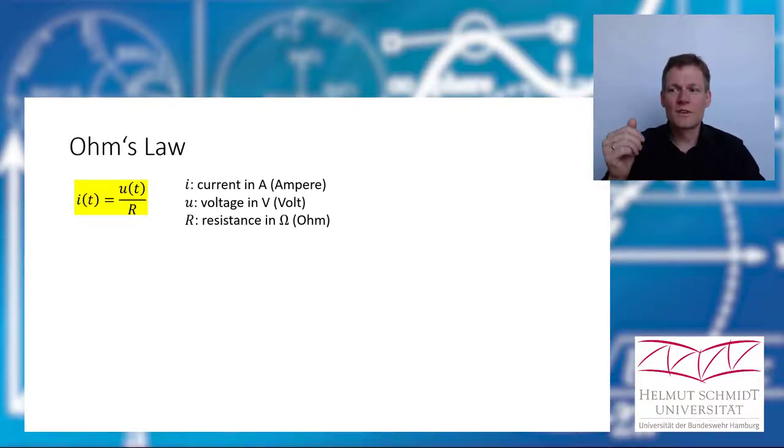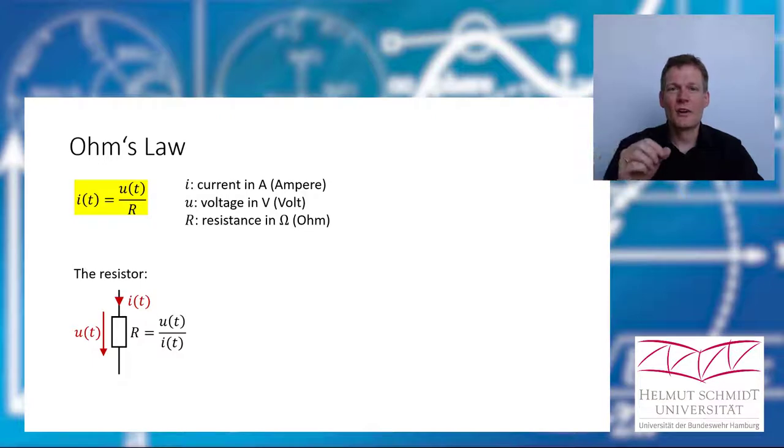Our basic circuit element is the resistor. At a resistor, Ohm's law is always valid. Therefore, our resistance can be calculated with Ohm's law: it is the voltage divided by the current. A resistor has a resistance in Ohm. The idea for this concept had a man called Ohm.